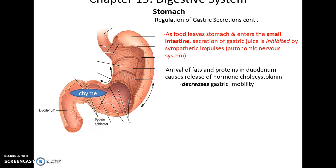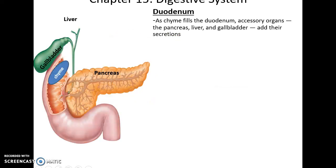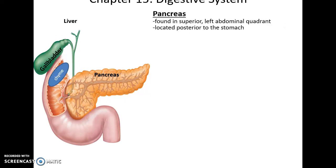Gastric motility also slows down by the release of the hormone cholecystokinin. The duodenum is the first part of the small intestine. As it fills with chyme, it sends out signals to receive secretions from the accessory organs: the pancreas, the liver, and the gallbladder.